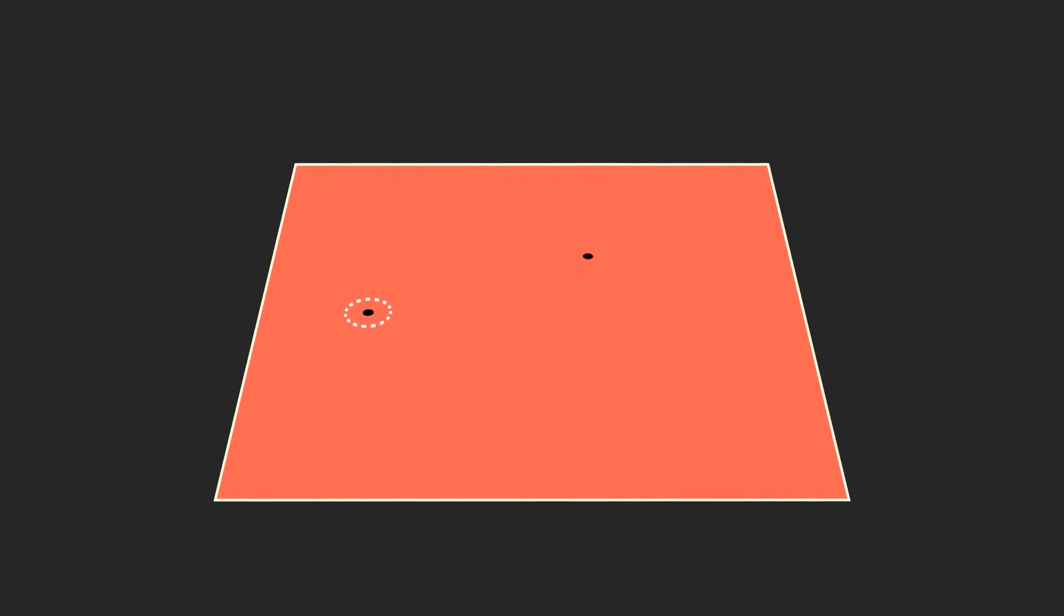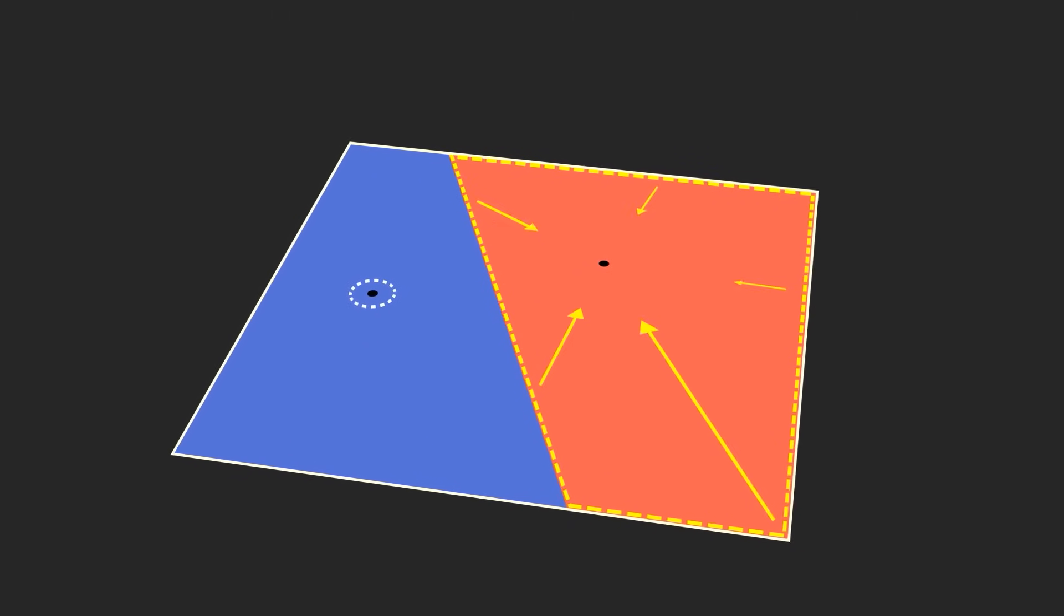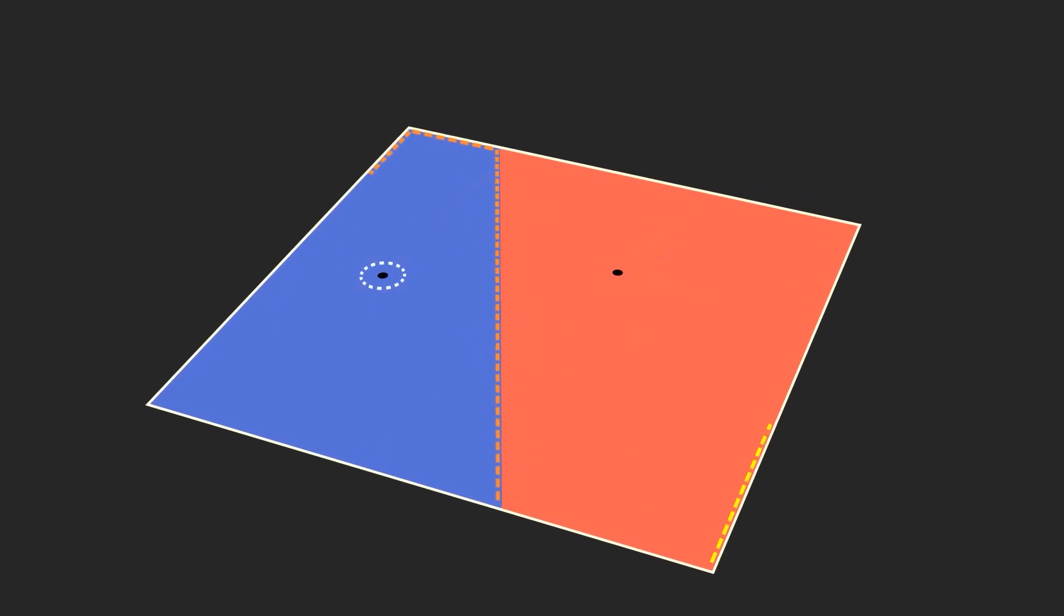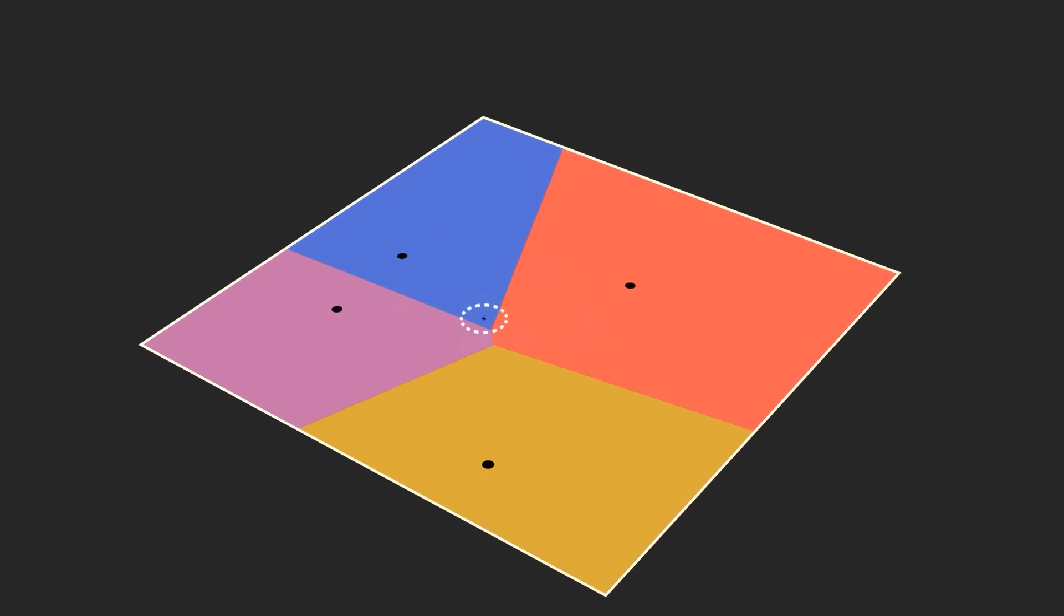Now add another site, but color only where the new site is closer than the first. Red areas are closer to the first site, and blue ones are closer to the second. Each new site forms a cell where the new site is the closest site to areas in that cell.